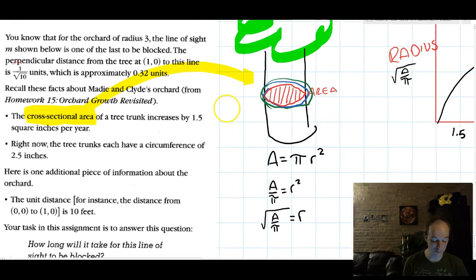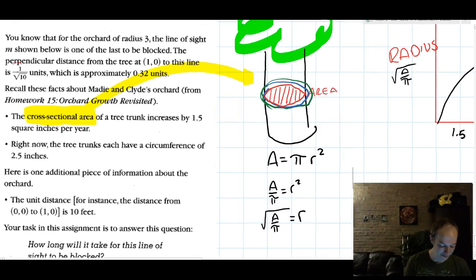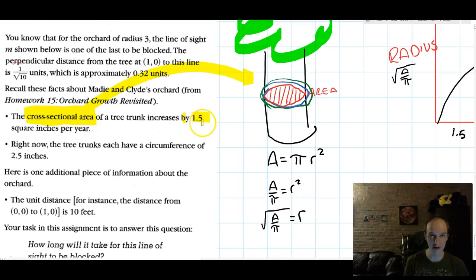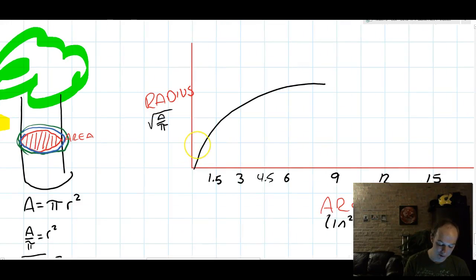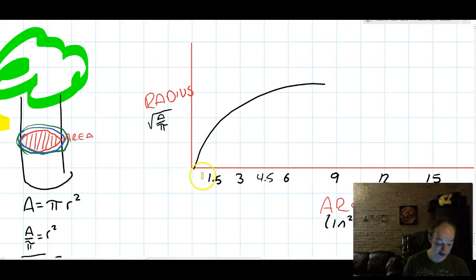What that means for this problem is that if the area of the tree trunk increases at a constant rate of 1.5 square inches every year, then the radius does not. So here's what my area looks like, increasing at a constant rate: 1.5, 3, 4.5, 6, etc. The radius does not increase at a constant rate. It increases at a curved rate.